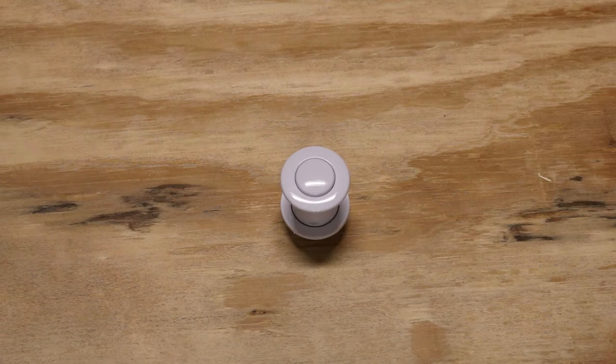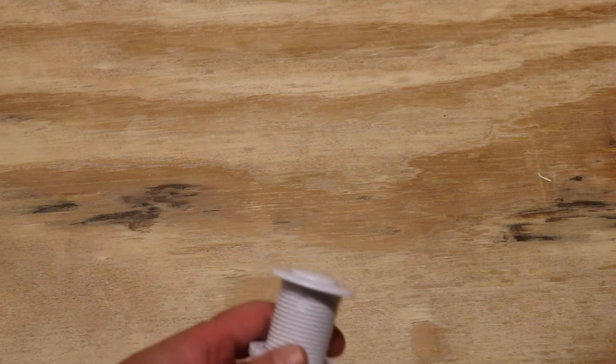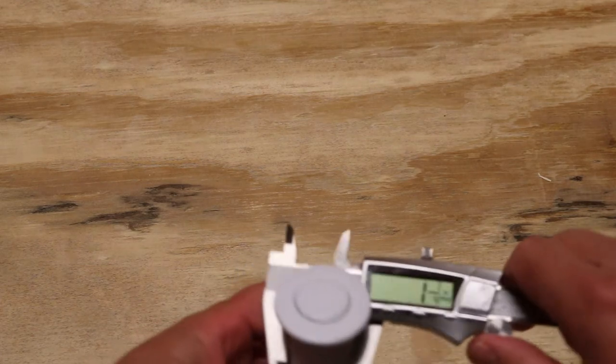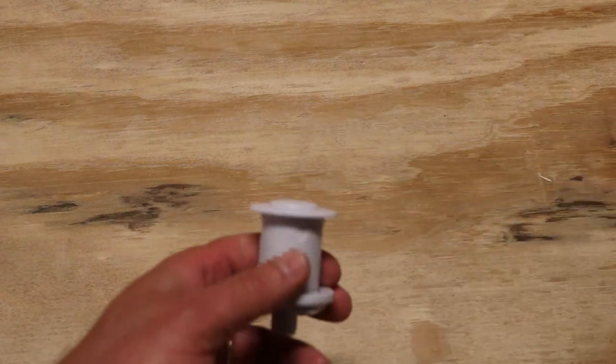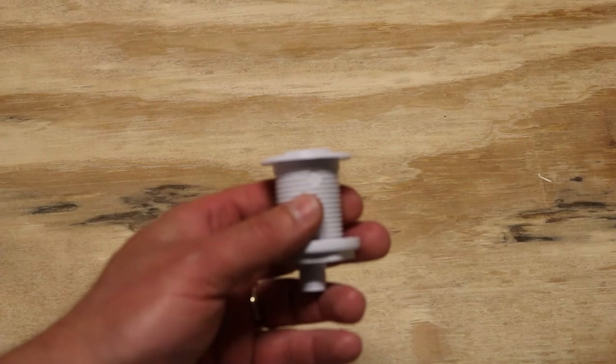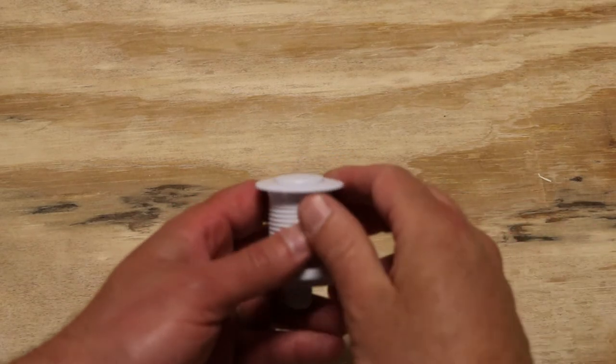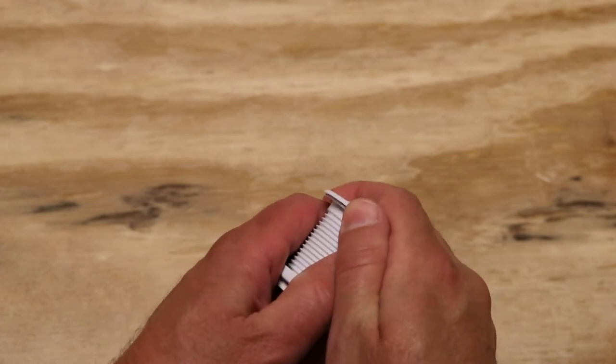All right, first let's look at the hole diameter. My digital micrometer here is reading inch and a quarter, so it's going to fit an inch and a quarter hole size. Let's take a look at the side version of this. We have a very low profile, very thin cap here.